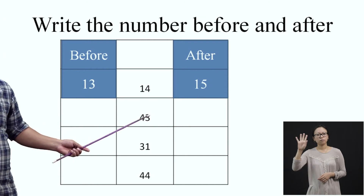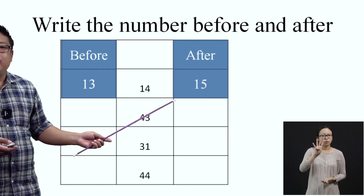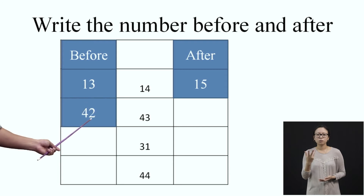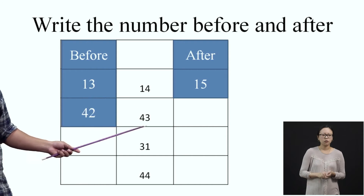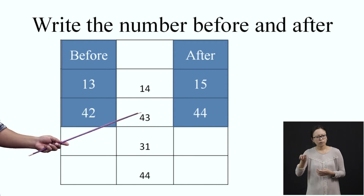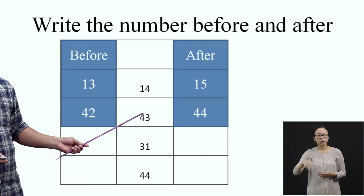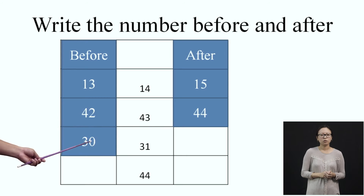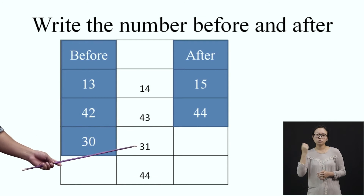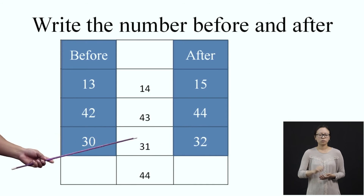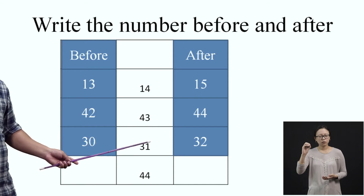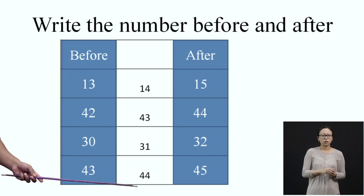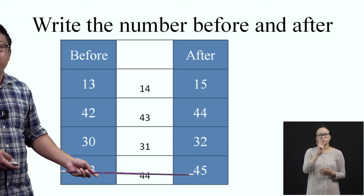For forty-three, you start counting from forty-one: forty-one, forty-two, forty-three. Just before reaching forty-three, you counted forty-two. So forty-two, forty-three, forty-four — the number before forty-three is forty-two, and the number after forty-three is forty-four. Before thirty-one, we have thirty. So we can read: thirty, thirty-one, and after thirty-one comes thirty-two. The number before thirty-one is thirty, and the number after thirty-one is thirty-two. In the same way, this row reads as forty-three, forty-four, forty-five.